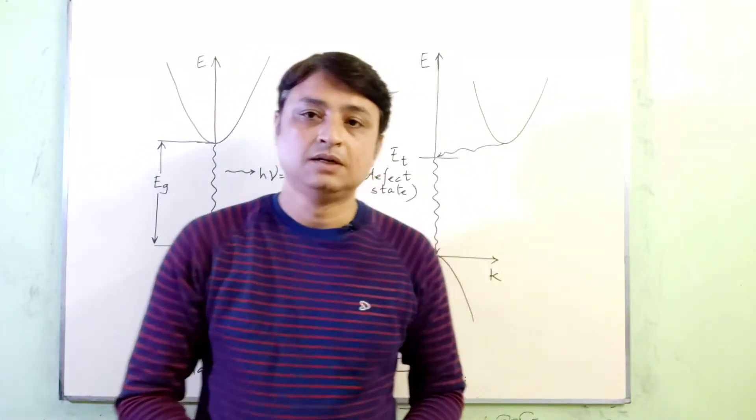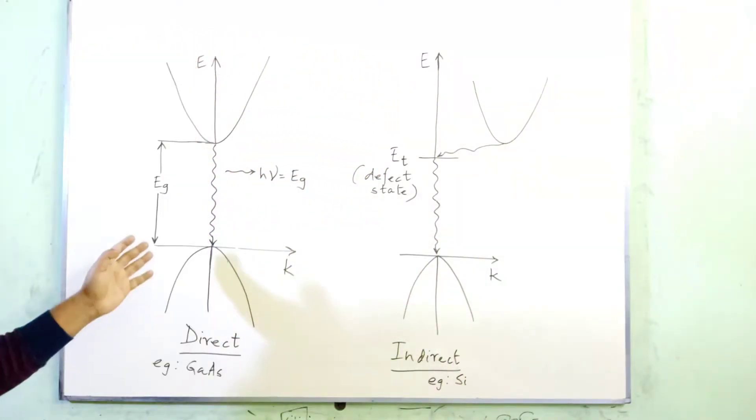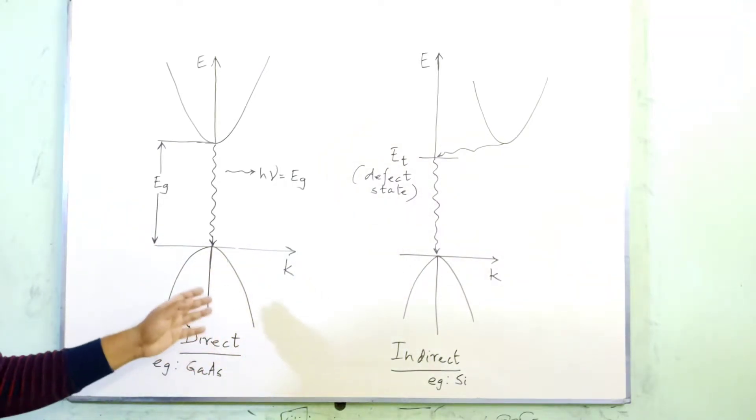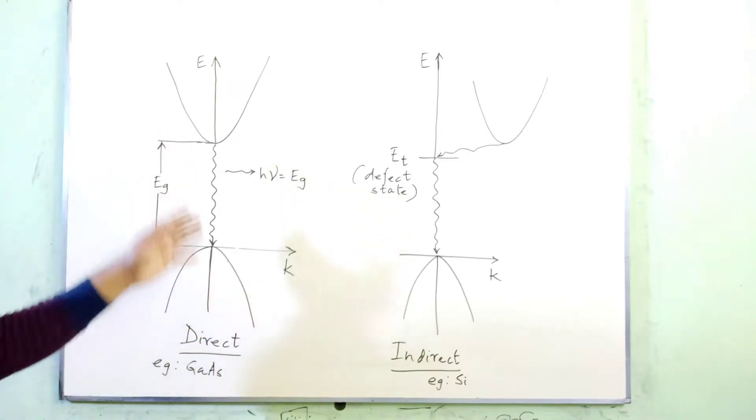Now let's start our discussion with this diagram. In the first part, you can see a direct semiconductor shown - this is the EK diagram.